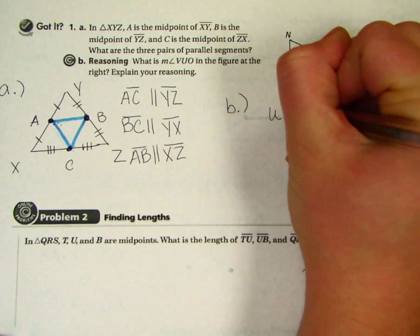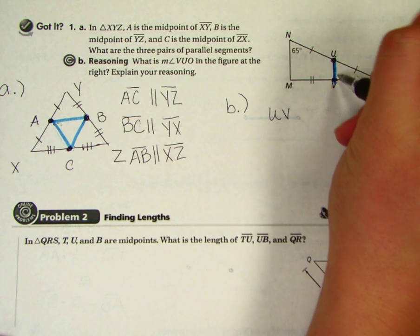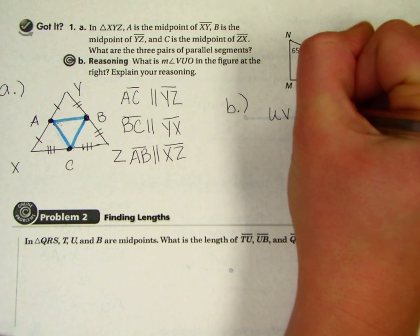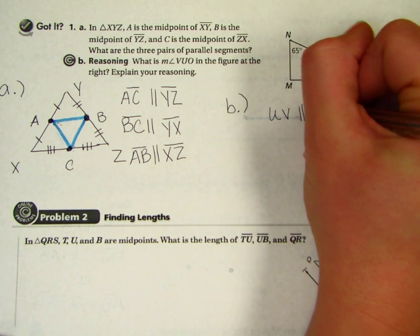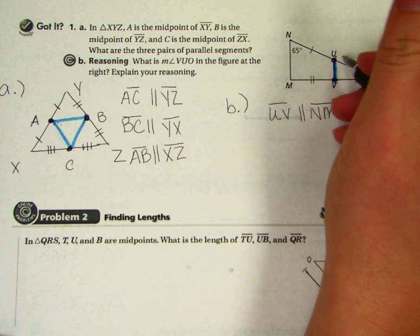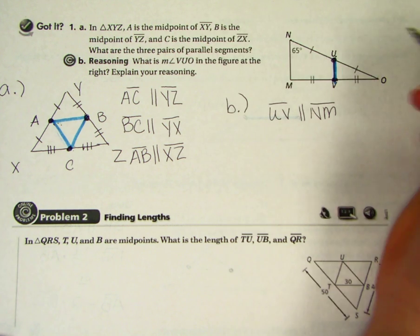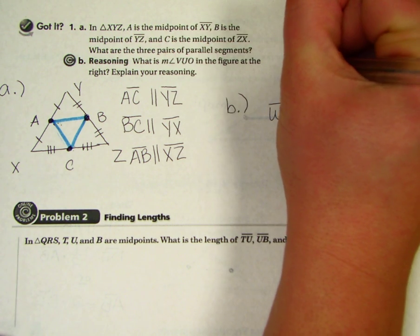Let's look at UV and what can I say it's parallel to? NM. So UV is parallel to NM. I'm going to mark my lines as parallel so I remember.